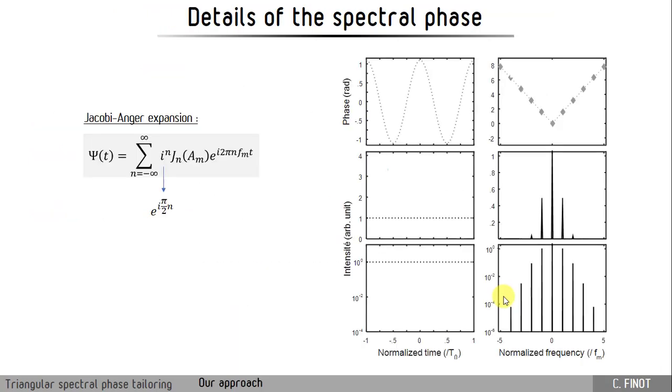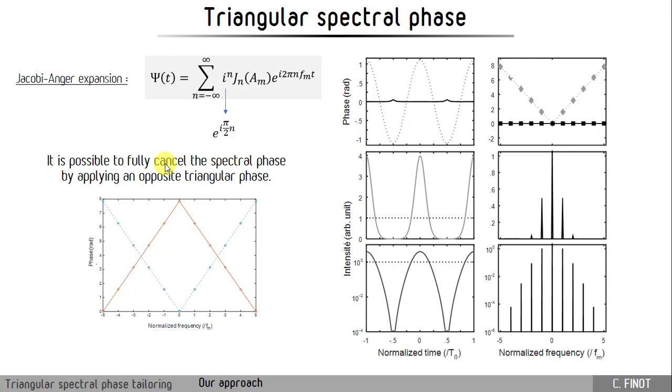Our method is based on the Jacobi-Anger expansion, and what we can note in this expansion is that between two successive components, there is a phase shift in the spectral domain of pi over two. The spectral phase is not parabolic, is not quadratic, the spectral phase is triangular. That means that if you just use a quadratic spectral phase, you can just partly cancel the spectral phase. Now, if you are able to generate exactly the opposite of the triangular spectral phase, what you will obtain is a spectral phase that is perfectly cancelled, so you will obtain very nice pulse shapes in the temporal domain.